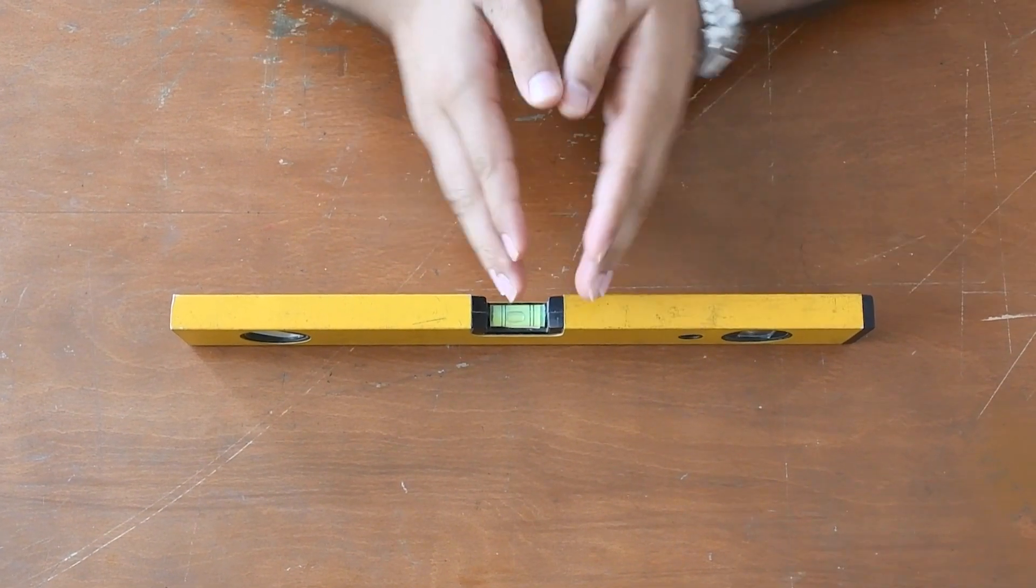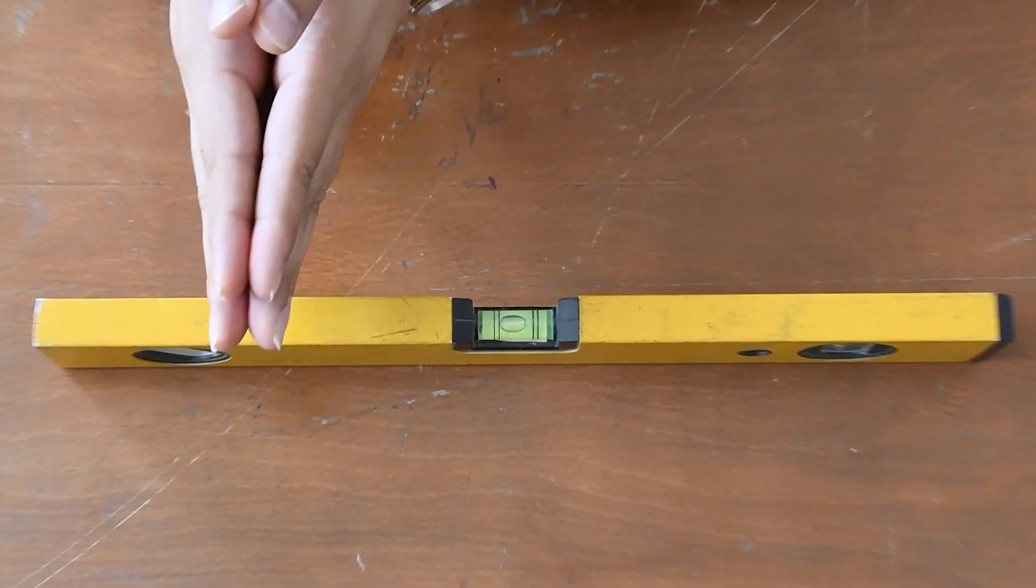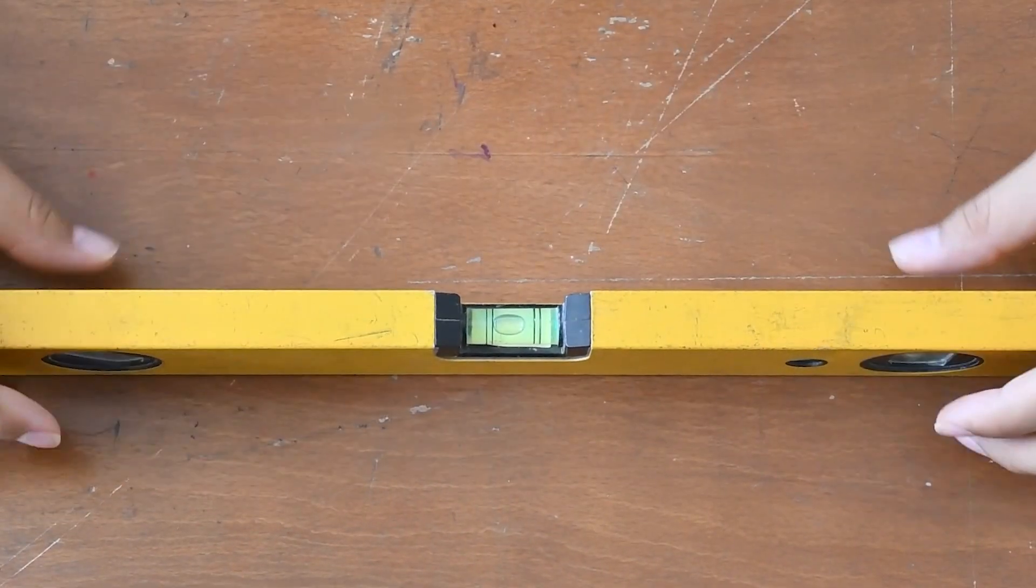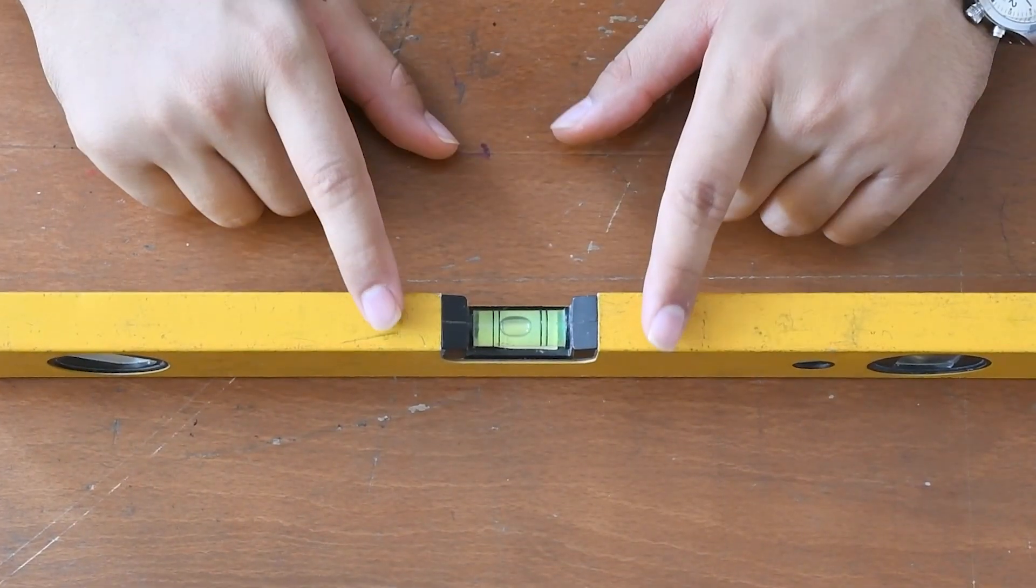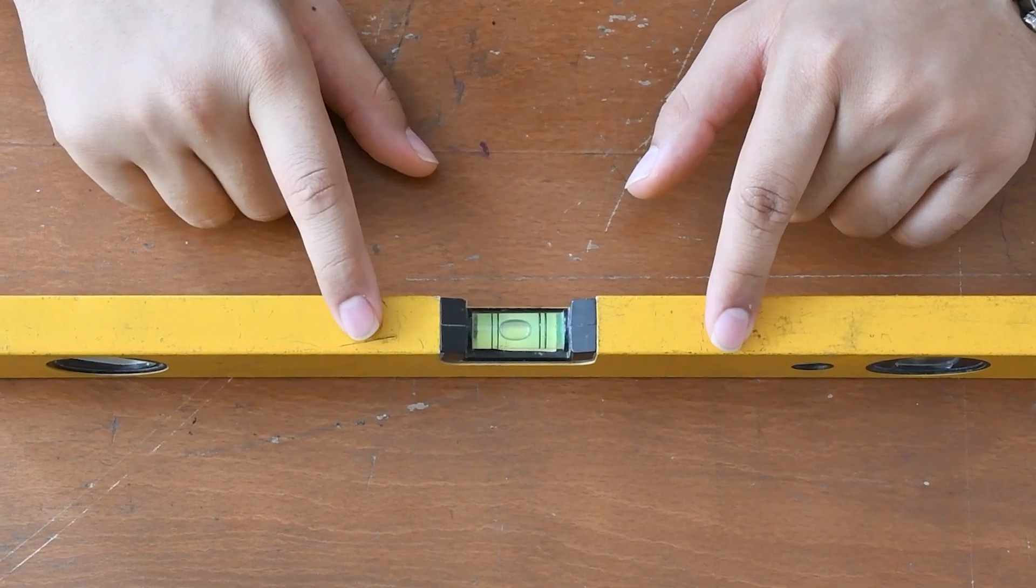We can see that the bubble is tilted to my right, while it is to your left, and this shows that the spirit level is not working properly.